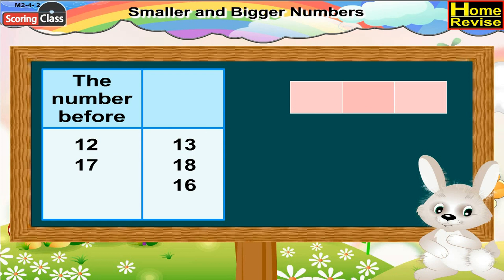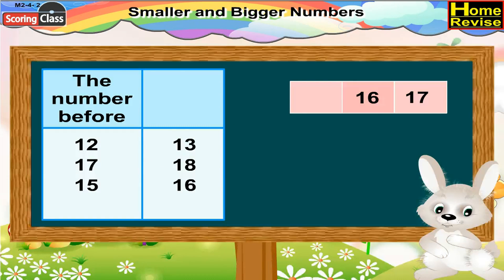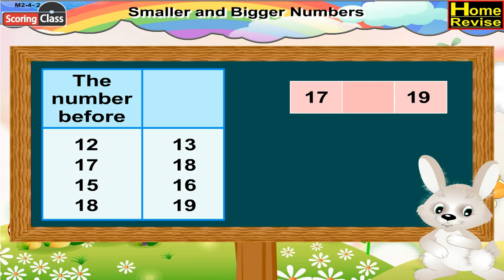Which number comes before 16? Well, it is 15, 16, 17. So, 15 comes before 16. And which number comes before 19? Yes, it is 18.